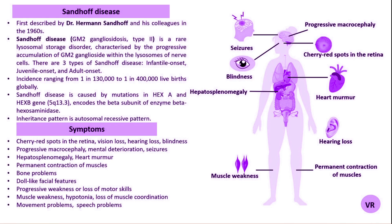Infantile Sandhoff disease is the most severe form. Infants typically appear normal initially but development slows and they may lose previously acquired motor skills like sitting, crawling, and rolling over. Muscles become weak and there may be increased muscle tone, that is spasticity, leading to stiff limbs. Seizures are common. Infants react excessively to loud noise, that is an exaggerated startle response. Cherry red spots are observed in the eye during an examination. Liver and spleen are enlarged, that is hepatosplenomegaly. Progressive vision and hearing loss can occur. Infantile Sandhoff disease is usually fatal in early childhood.